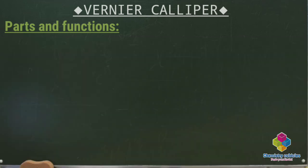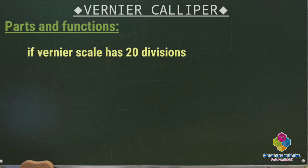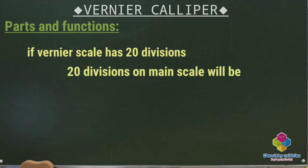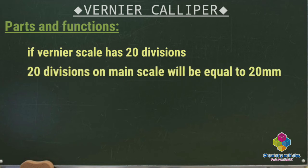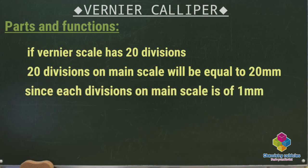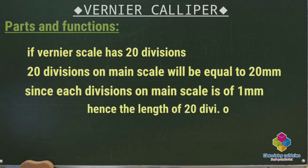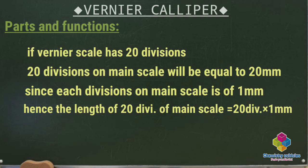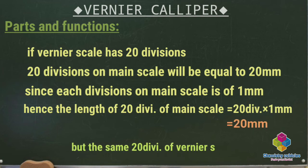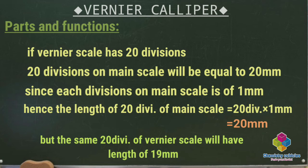For example, if the vernier scale has 20 divisions, then 20 divisions on the main scale equal 20 millimeters since each single division on the main scale is 1 millimeter. But the same 20 divisions on the vernier scale will equal 19 millimeters — that is, 1 division less on the main scale.